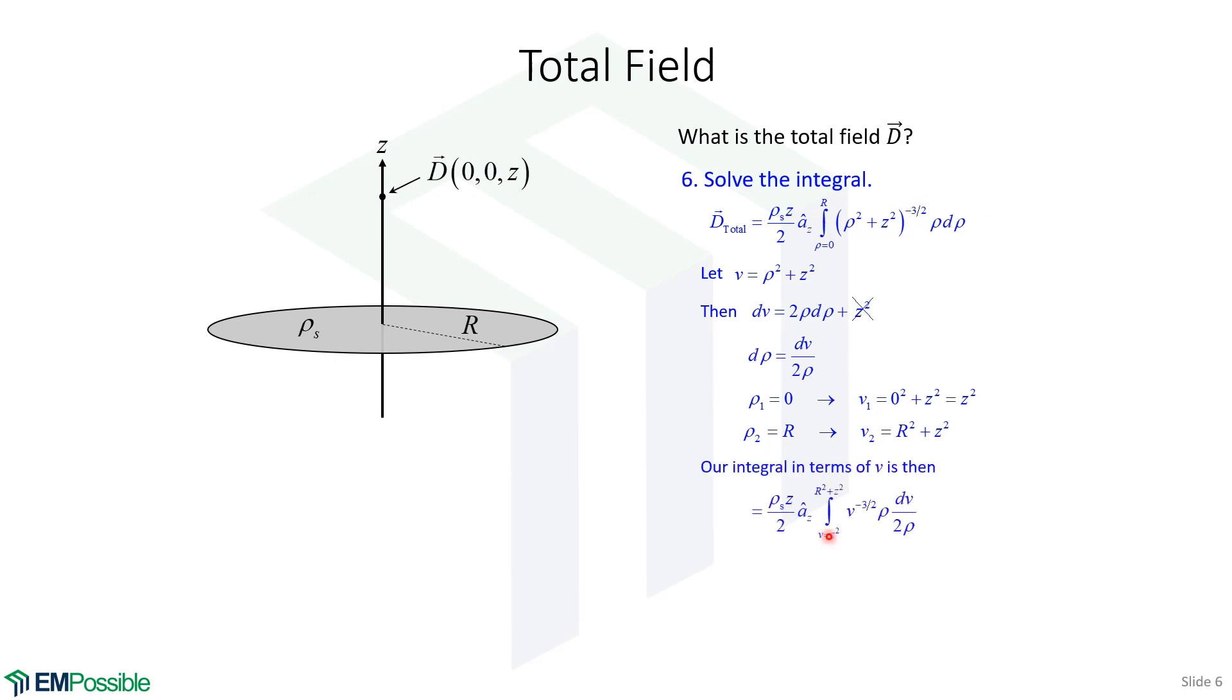We now have everything we need to write this r integral in terms of v. So we have our new starting v, our new ending v. We now have v to the minus three halves, but we still have a rho here that came from up here. And we're replacing d rho with dv over two rho. We now see that this rho can cancel with this rho. And this two can come to the outside to give us a four. So that's where we are. Now this is easy to integrate.